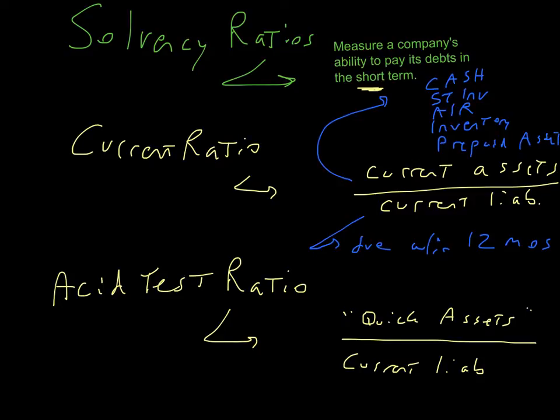So the current ratio is computed by taking this total of current assets divided by current liabilities. And both of those subtotals are readily available on almost any financial statement you'll ever look at. That's why the current ratio is so popular.